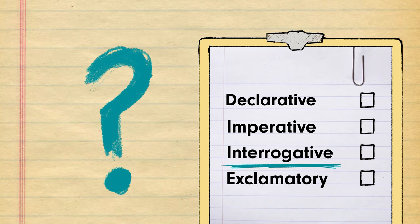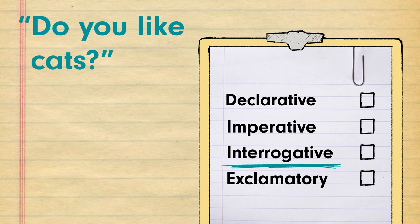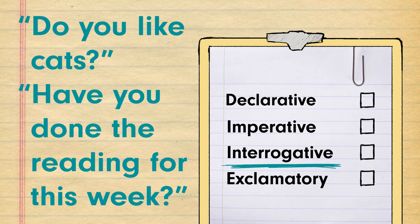An interrogative sentence is a question such as do you like cats or have you done the reading for this week? You can usually identify these with the use of a question mark.